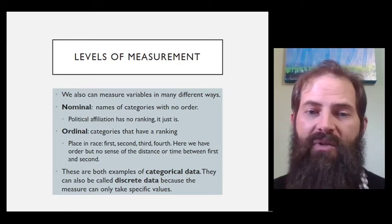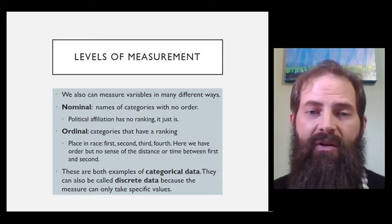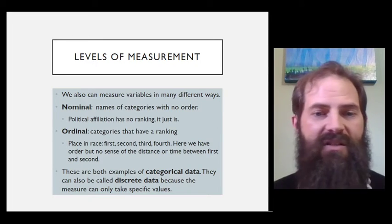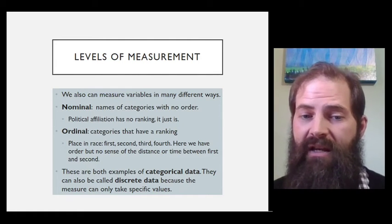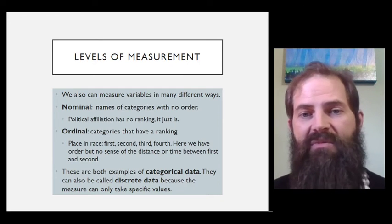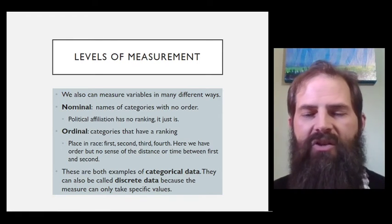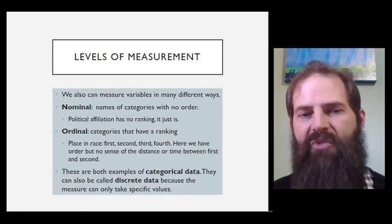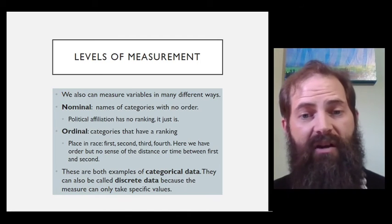When we think about our nominal and ordinal variables, we're going to be calling these categorical variables or categorical data. When I say categorical data, I literally mean that these are just categories. They may or may not have ranking. We also call these discrete data because the measure can only take very specific values. The names can only be the names that are available. The political affiliations can only be the political affiliations that are available. You'll never hear me use the phrase discrete data, however, in my lectures. I'm always going to call them categorical variables because I find that is so much easier to remember.